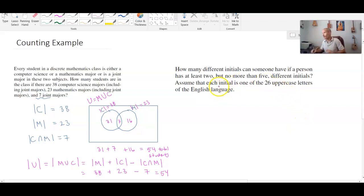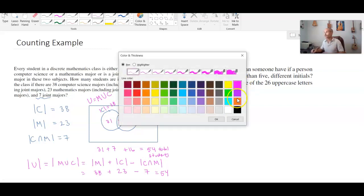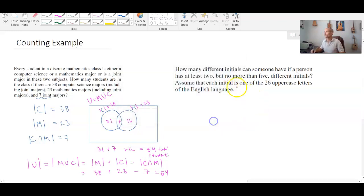In the second example, how many different initials can someone have if a person has at least two but no more than five different initials? So this is one of those situations where we're going to have to consider a bunch of different cases.